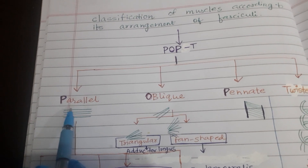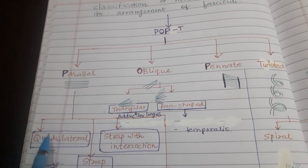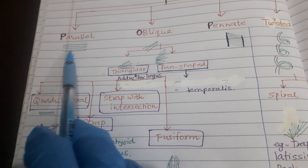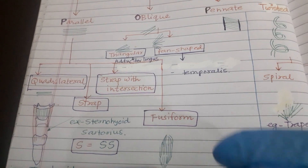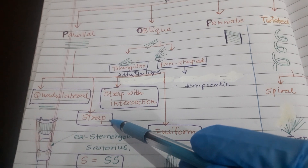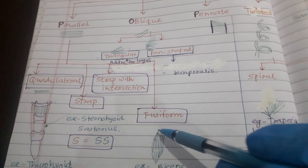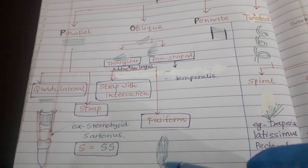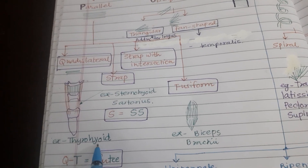Parallel: if the arrangement of muscle fibers is parallel, then this type is regarded under the parallel variety. It will be of four types. If it extends to some extent, it is quadrilateral. If it becomes a strap-like, more lengthy, it is the strap variety. If there is an intersection in between, it is strap with intersection. And if it converges to a point before and after, it becomes fusiform.